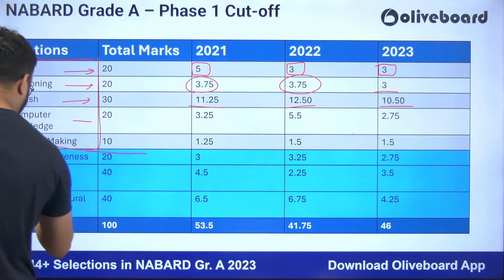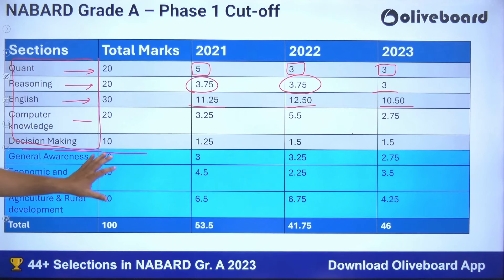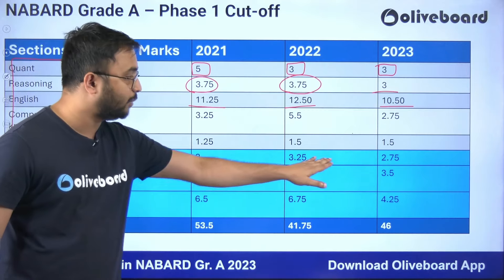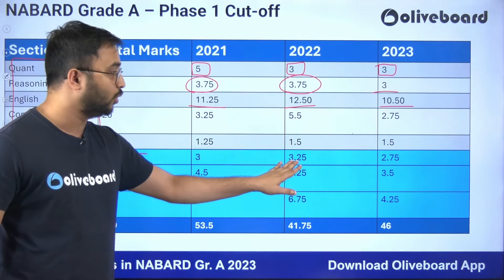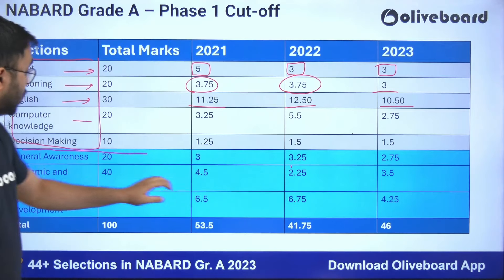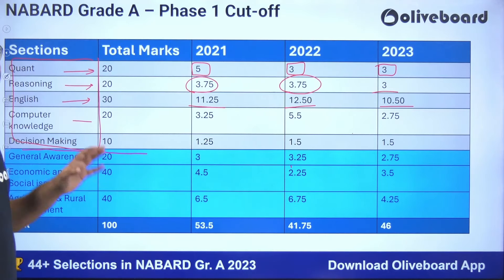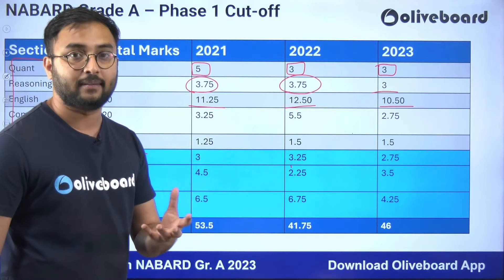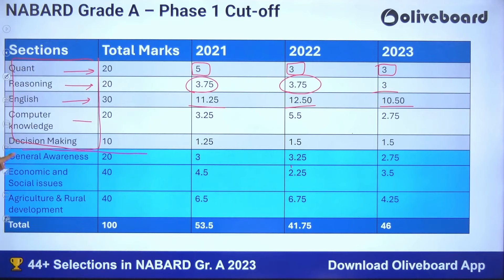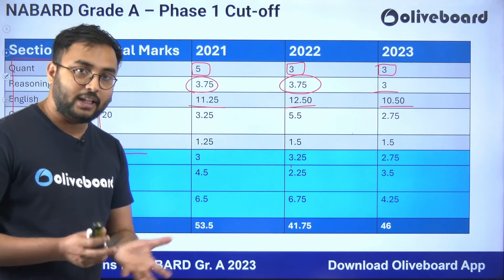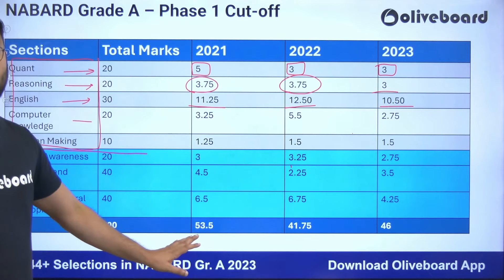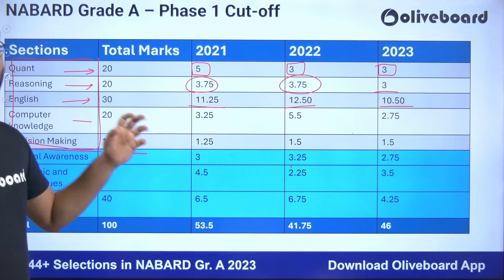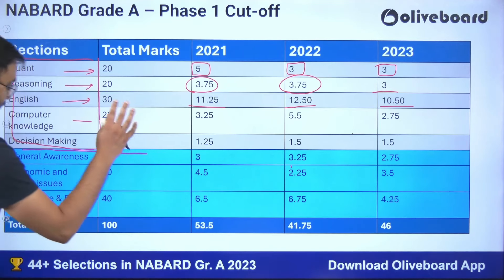When it comes to merit sections, the total tally marks are counted. For general awareness, even though the cutoff is around 3 marks — the highest was 3.25 in 2022 and the latest was 2.75 — you should keep a target score above 10 marks. The reason is that your marks in GA, ESI, and ARD all combine into a tally compared against the overall merit cutoff, which determines whether you clear Phase 1. So keep a target of 10 plus for GA.